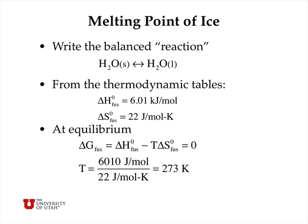The melting point of ice we can calculate from thermodynamics by first writing the balanced reaction of solid water going to liquid water. From thermodynamic tables, we can look up the delta H of fusion, which is 6.01 kilojoules per mole, and the delta S of fusion, which is 22 joules per mole per Kelvin. This is an endothermic reaction as written and entropy is also positive, so both delta H and delta S are positive. That means enthalpy favors the reactants or ice, and entropy favors the products or liquid water.